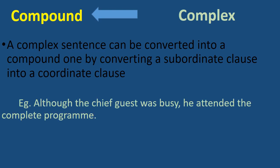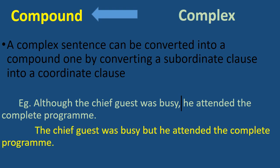Now, changing complex to compound. For example: 'Although the chief guest was busy, he attended the complete program.' This is complex. To make it compound: 'The chief guest was busy, but he attended the complete program.' We replace the subordinating conjunction 'although' with the coordinating conjunction 'but,' giving us two coordinating clauses.